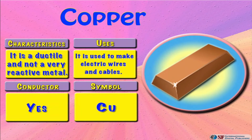Copper. It is a ductile or soft metal, and it's not considered to be a very reactive type of metal. It is a very good conductor of electricity — hence we use it to make electric wires and cables. Its symbol is Cu.